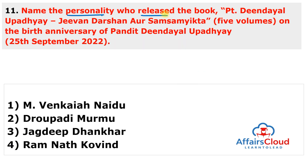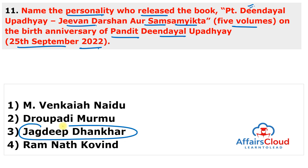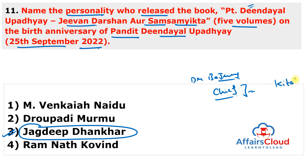The next question: Name the personality who released the book 'Pandit Deen Dayal Upadhyay: Jivan Darshan aur Sam Samiksha,' a five-volume work, on the birth anniversary of Pandit Deen Dayal Upadhyay observed on 25th September 2022. This book was released by Vice President of India Jagdeep Dhankhar. Dr. Bajrang Lal Gupta is the chief editor of this book, which is published by Kitab Wale Publications. The book covers the life philosophy of Pandit Deen Dayal Upadhyay across five volumes.